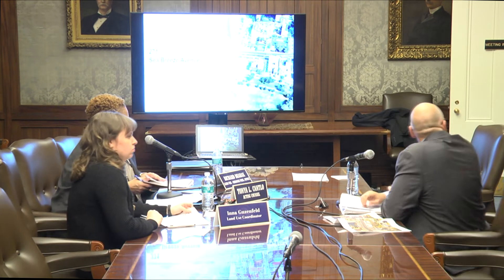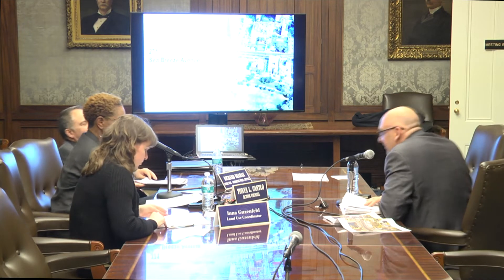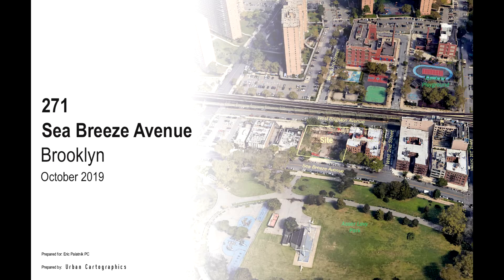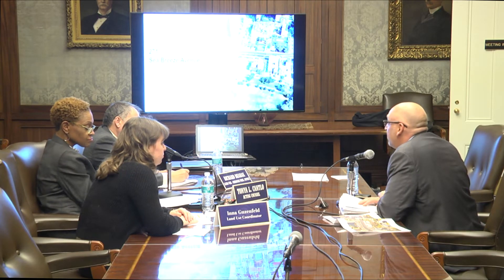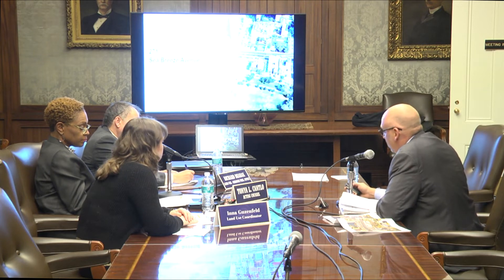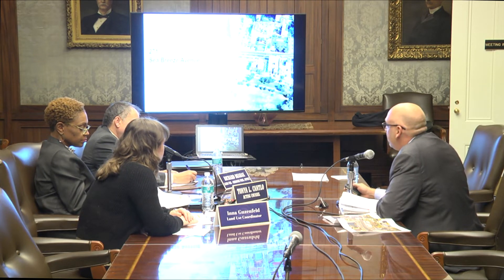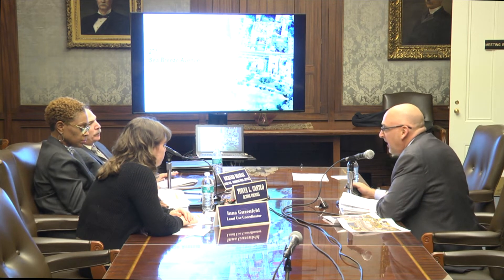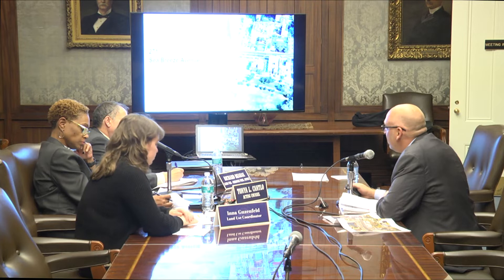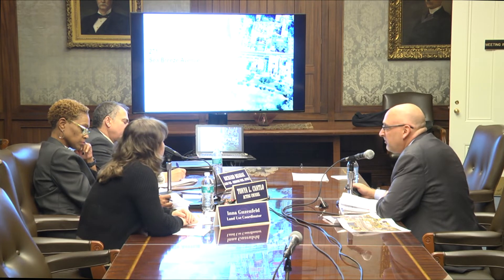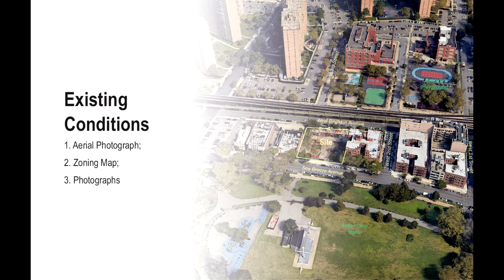Eric Palatnik presenting, acknowledging land use co-chair from Community Board 13, Marion Lever. The land use committee voted unanimously — seven votes — to support the application the previous evening. This is a rezoning to add a C2-4 overlay, but it is really a revitalization project that is going to help see a resurgence in Asser Levy Park, which is about to undergo a tremendous renovation. The block currently has parking for Trump Village, some community facility uses and synagogues, and residential buildings dating to the 1950s.